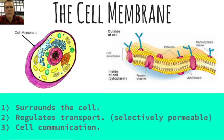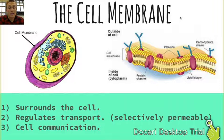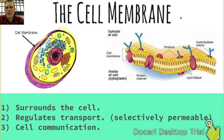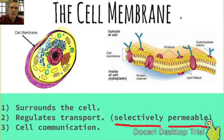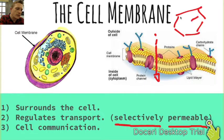The first organelle you need to be familiar with is the cell membrane. This is the part of the cell that really makes it a cell — it's the part that surrounds the cell. It regulates transport, meaning it's selectively permeable, and it determines what types of things enter and exit the cell. Small things can very easily pass through the cell membrane, whereas big things like starch need to be digested before they can pass through.